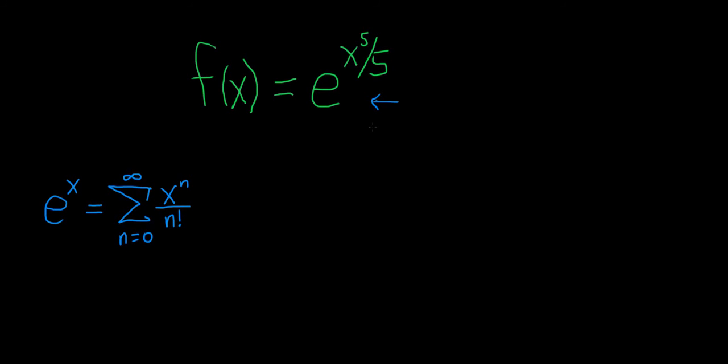So the only thing we have to do in this problem is basically replace the x here with x to the 5 over 5, and then simplify. This equation holds for all x. So let's go ahead and do that. I'll do it below.